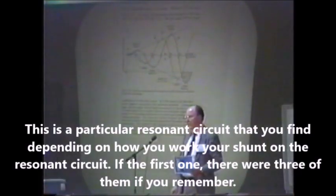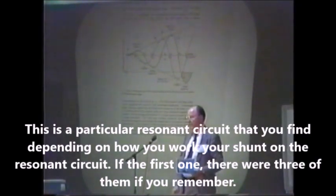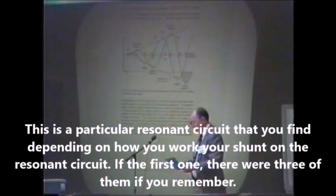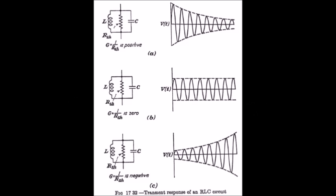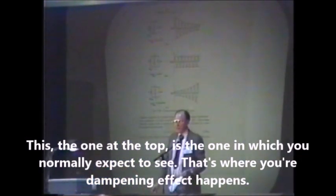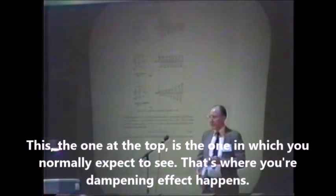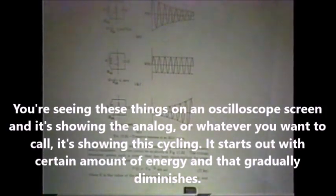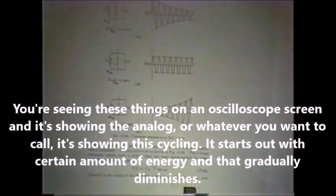This is a particular resonant circuit that you find depending on how you work your shunt on the resonant circuit. There were three configurations. The one at the top is the one you normally expect to see — that's where your dampening effect happens when viewing on the oscilloscope screen. It shows the cycling starting with a certain amount of energy that gradually diminishes.